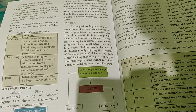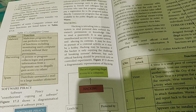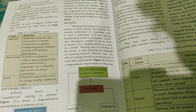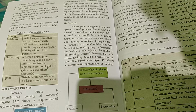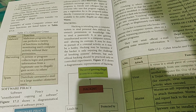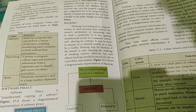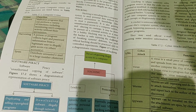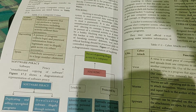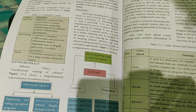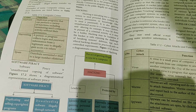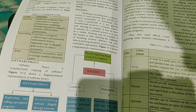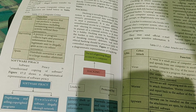Today we are going to see about software piracy. Software piracy is the unauthorized copying of software. A diagrammatic representation of software piracy has been given. Software piracy is divided into two sections: the first one is duplicating and selling copyrighted programs, and the second one is downloading software illegally through a network.